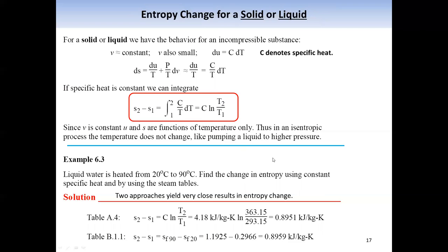Let's take a look at an example. If we heat water from 20 to 90 degrees C, the change in entropy calculated using this expression gives a number. If we look at the steam table, the change in entropy is very close to that number, which demonstrates that our assumption of eliminating the second term in the Gibbs relation is highly useful for solid and liquid.